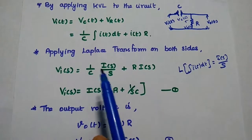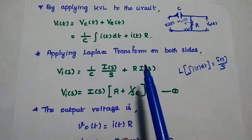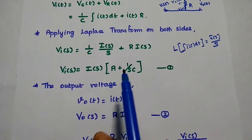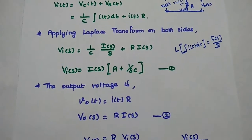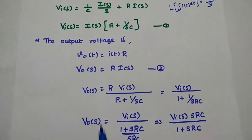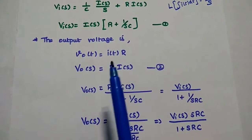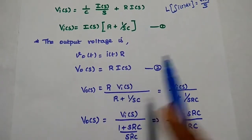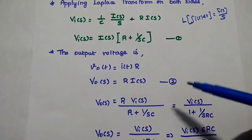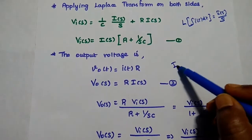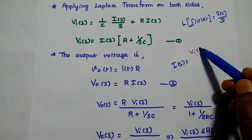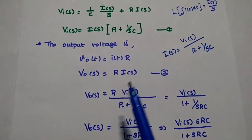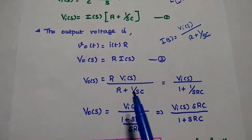So we get Vi of S equal to I of S into the quantity 1 by SC plus R, taking I of S as a common term. Consider this as the first equation. Next, the output voltage V0 of T is equal to I of T into R. Applying Laplace transform gives V0 of S equal to R into I of S. This is the second equation. Substituting from the first equation, I of S is equal to Vi of S divided by R plus 1 by SC. We substitute this value into the second equation, giving V0 of S equal to R into Vi of S divided by R plus 1 by SC.